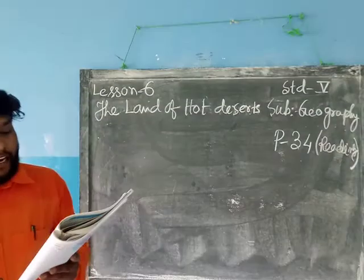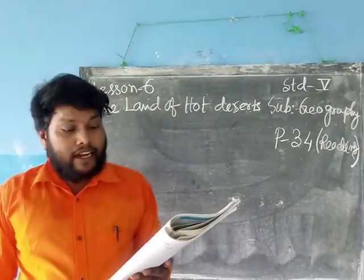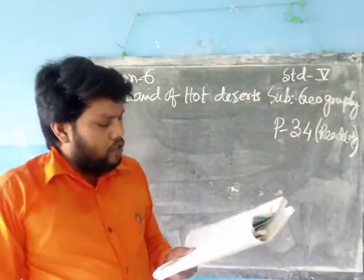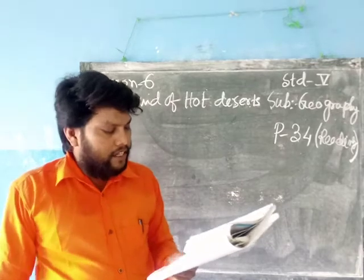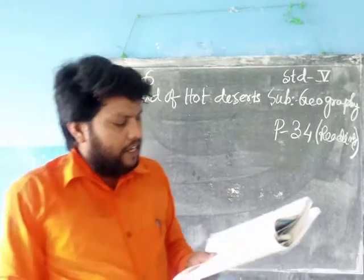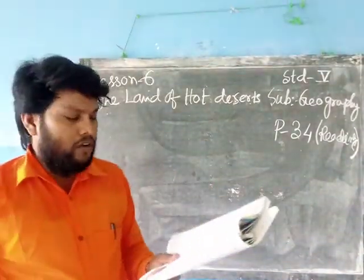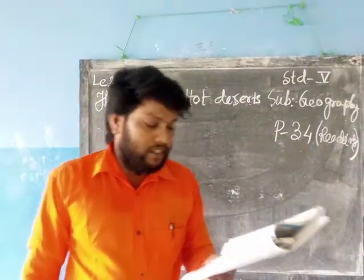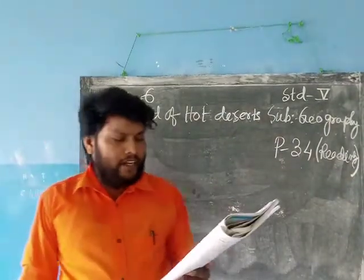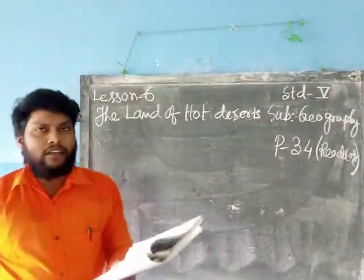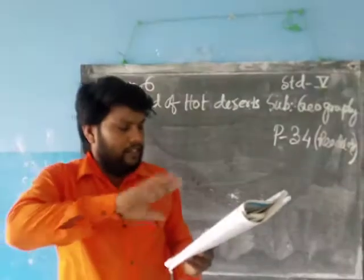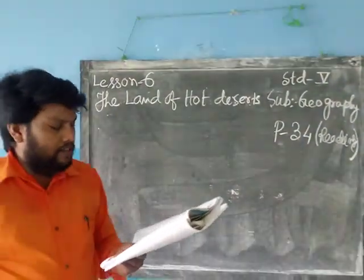The Sahara Desert in Africa is the largest hot desert in the world. We will notice that most of these deserts are located on the western side of the continents, and right between 15 degrees to 30 degrees north and south of the equator. That means these desert regions are located throughout the equator region between 15 to 30 degrees north and south.